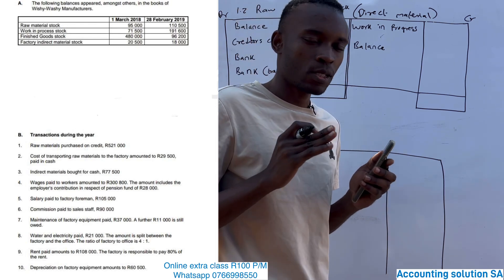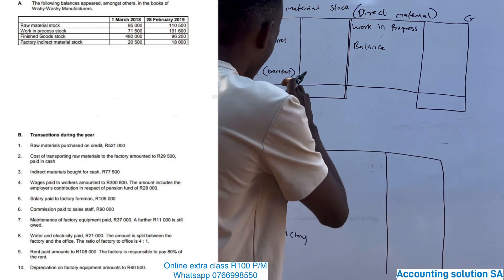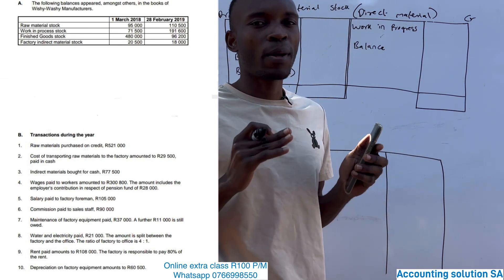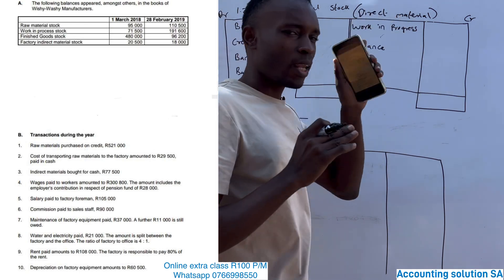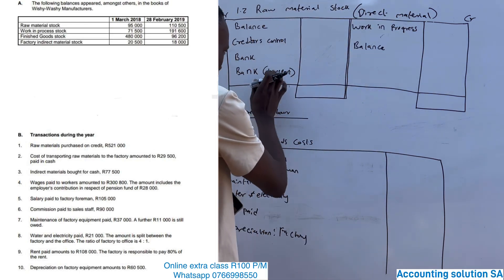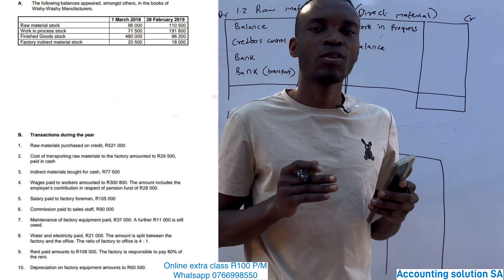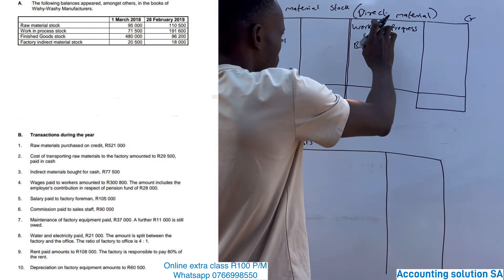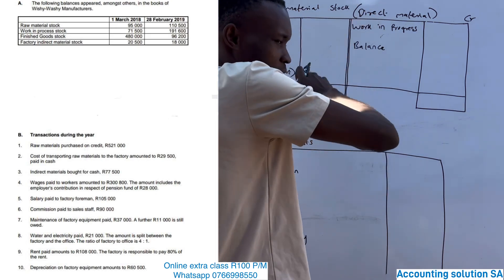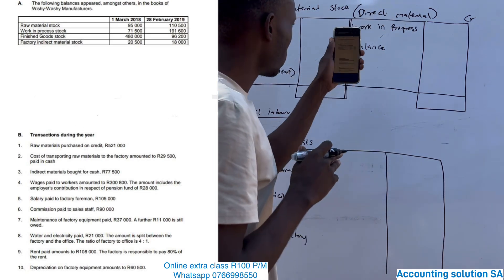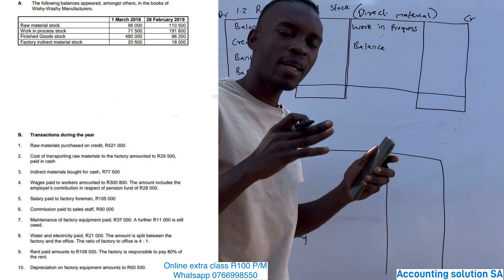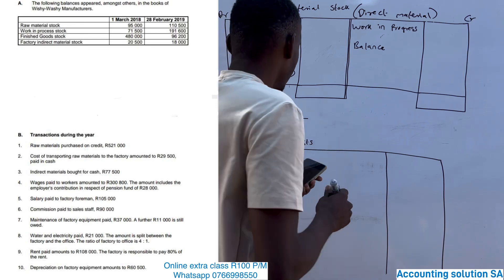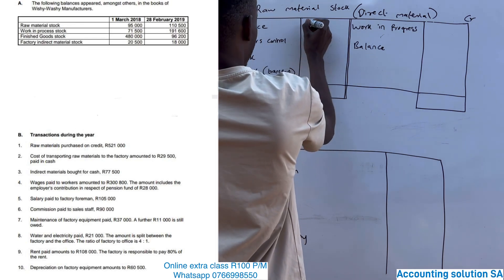Creditors control is used when we purchase raw material on credit. Bank is used when we buy raw material or direct material for cash. The last bank entry is for transport paid to deliver those materials. Work in progress is the balancing figure after we have calculated everything. The opening balance is 95,000.